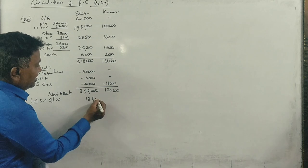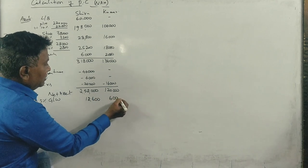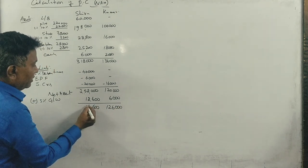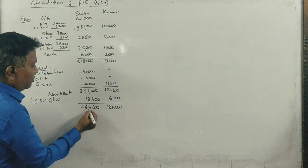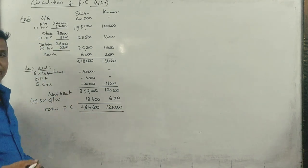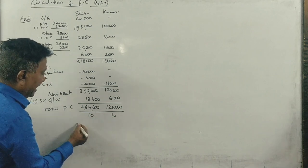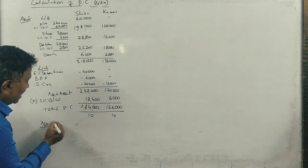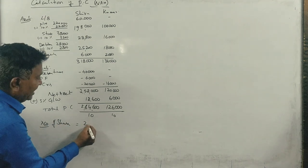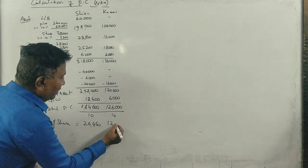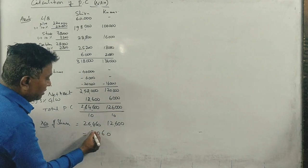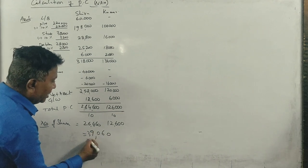On that goodwill is 5%. 12,600 and 6,000. I'll get total is 2 lakhs 64,600. This is the total purchase consideration, so that is shares. How much of the share? 12,600 shares. You put the total now as well, 39,060 shares.